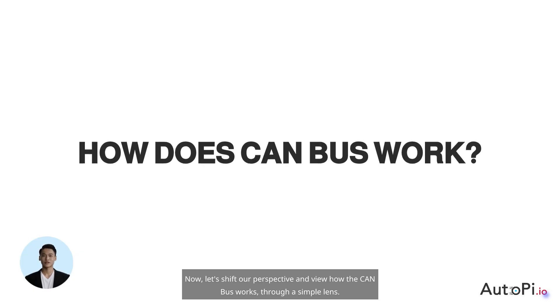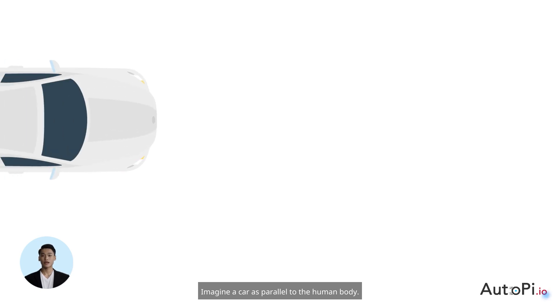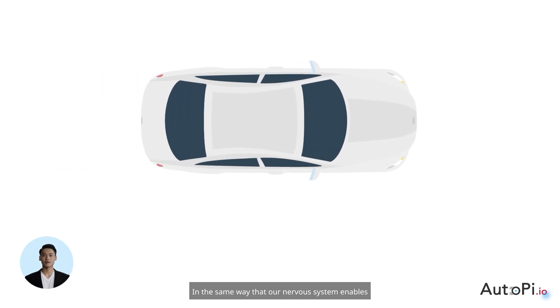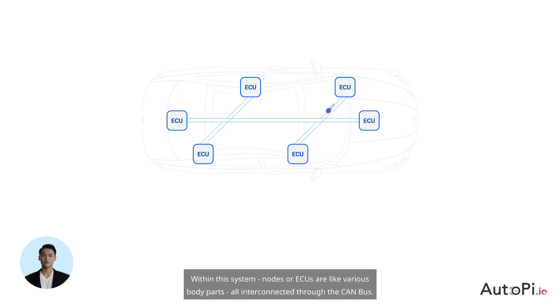Now let's shift our perspective and view how the CAN bus works through a simple lens. Imagine a car as parallel to the human body. In the same way that our nervous system enables communication within our body, the CAN bus serves a similar function for a car.